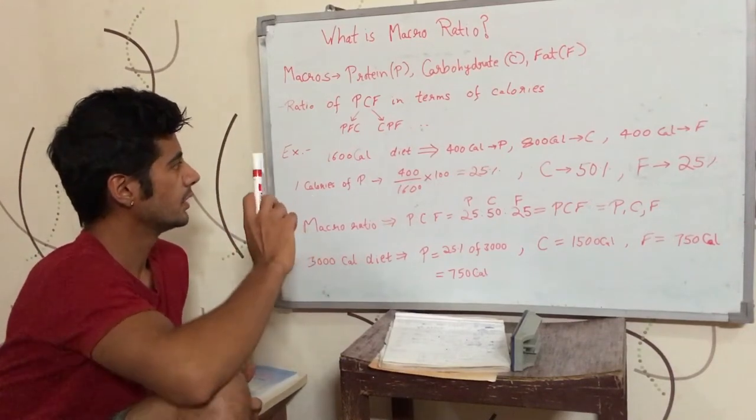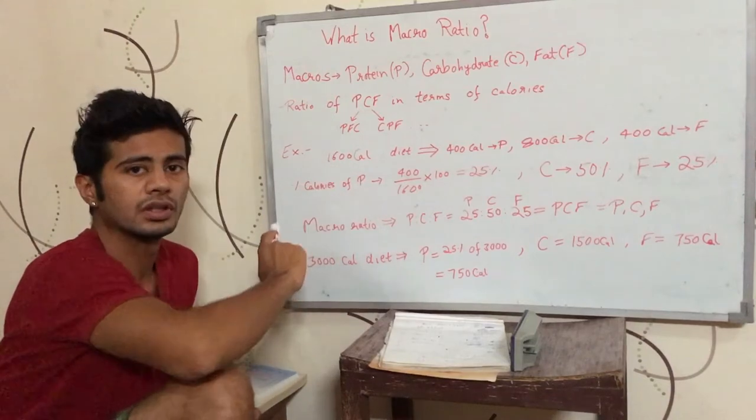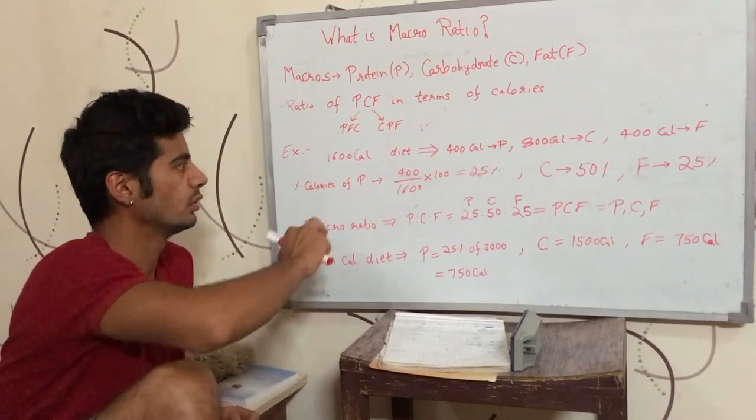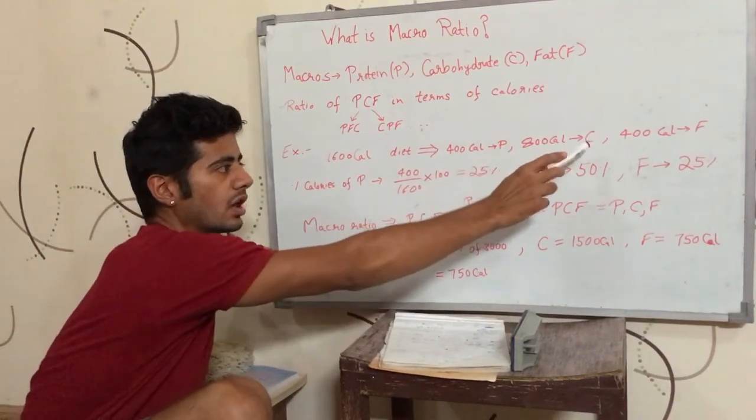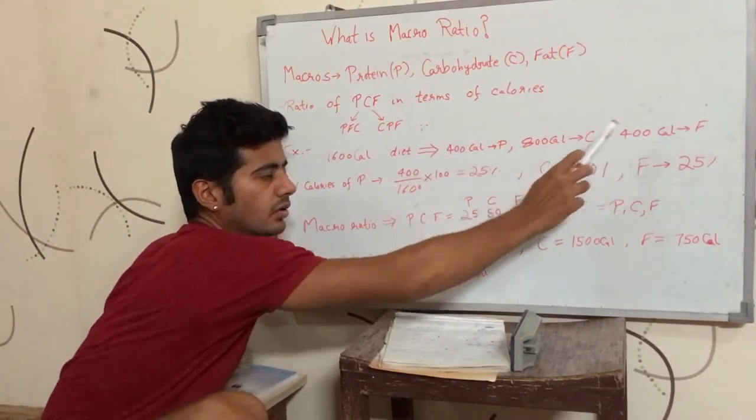Let me take an example. A man is eating 1600 calories. He takes 400 calories from protein, 800 calories from carbohydrates, and 400 calories from fat.